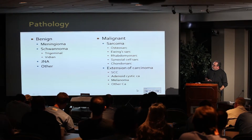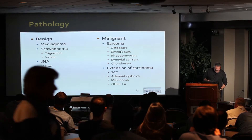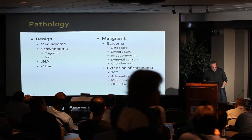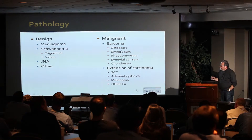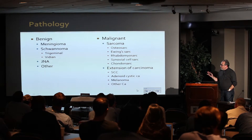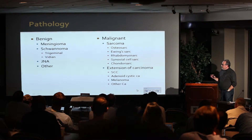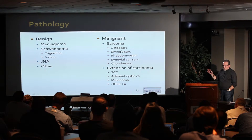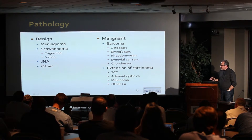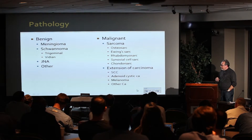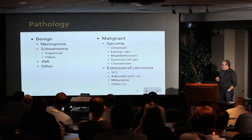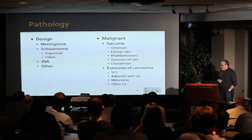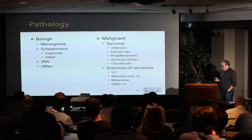The pathologies that occur in the infratemporal fossa are a myriad. The benign ones — the most common — are meningiomas that extend transcranially, schwannomas of the trigeminal nerve, and I've seen some vidian schwannomas in that location. Juvenile nasopharyngeal angiofibromas are other benign tumors.